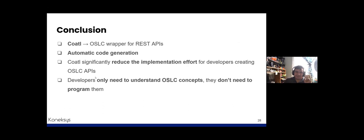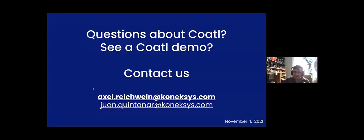As a conclusion, Coattle is an OSLC wrapper for REST APIs. This framework allows the user automatic code generation, reducing the implementation effort for developers. Developers only need to understand OSLC concepts, build an OpenAPI document, and create the OSLC API with Coattle and Swagger Codegen. All are welcome to see a demo, check this solution, or contact us — we are glad to help.